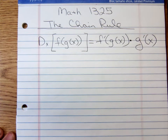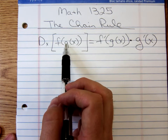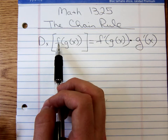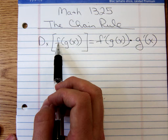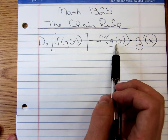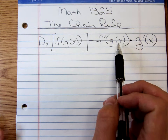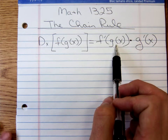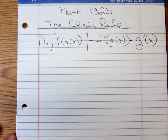With a composition of functions composed with g of x, you have an outer function and an inner function. You differentiate the outer function leaving the inner function alone, then multiply by the derivative of the inside function.